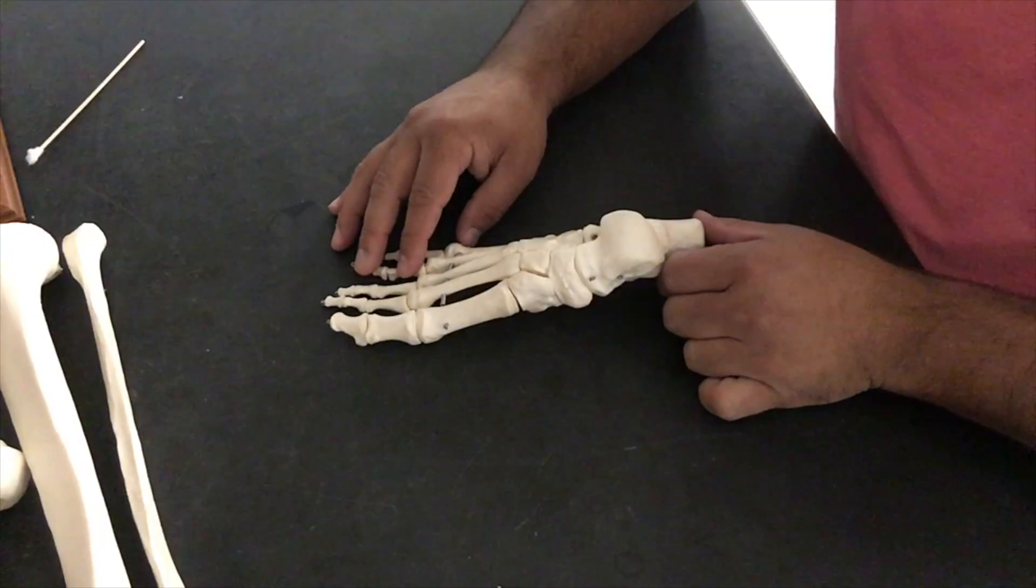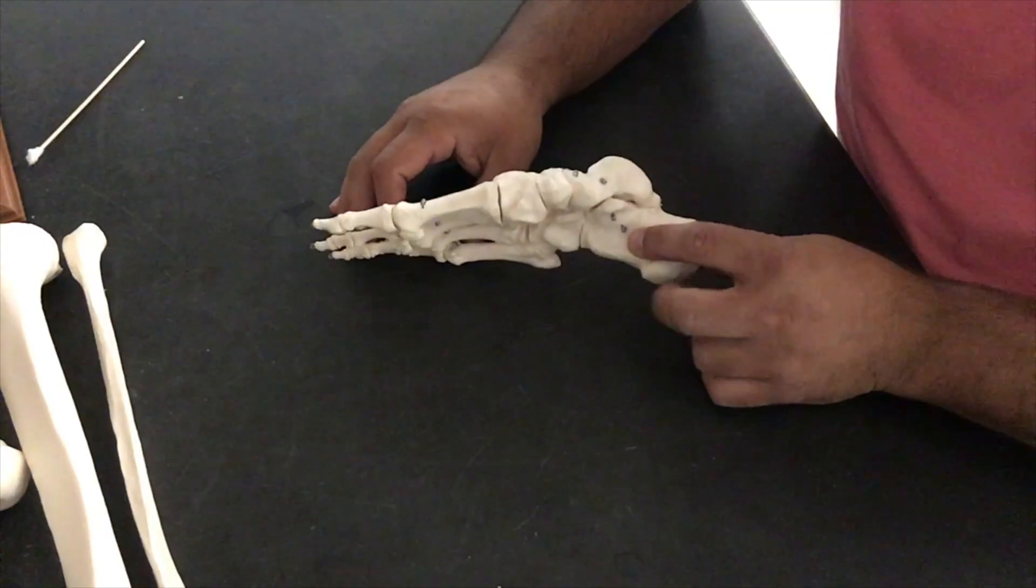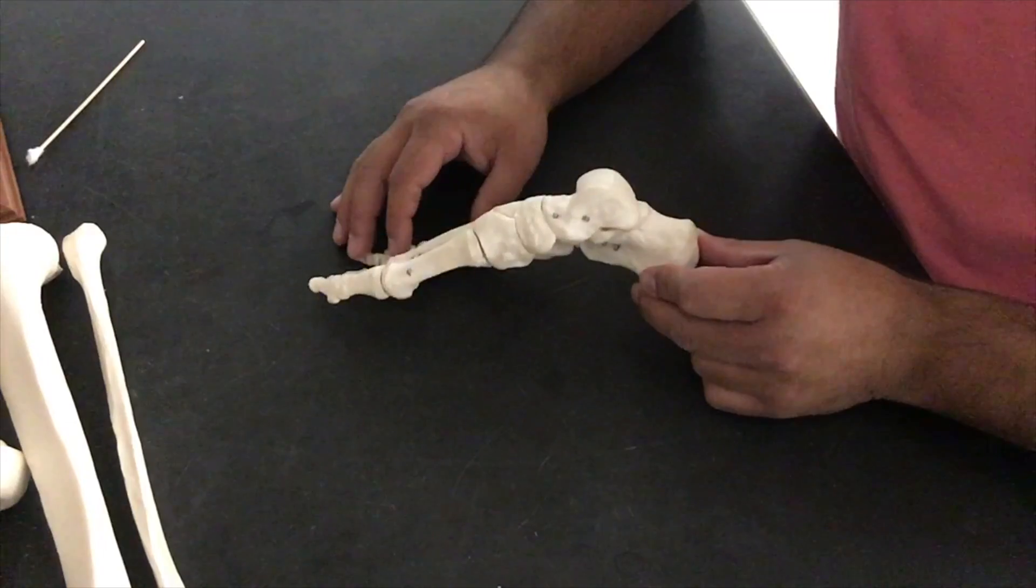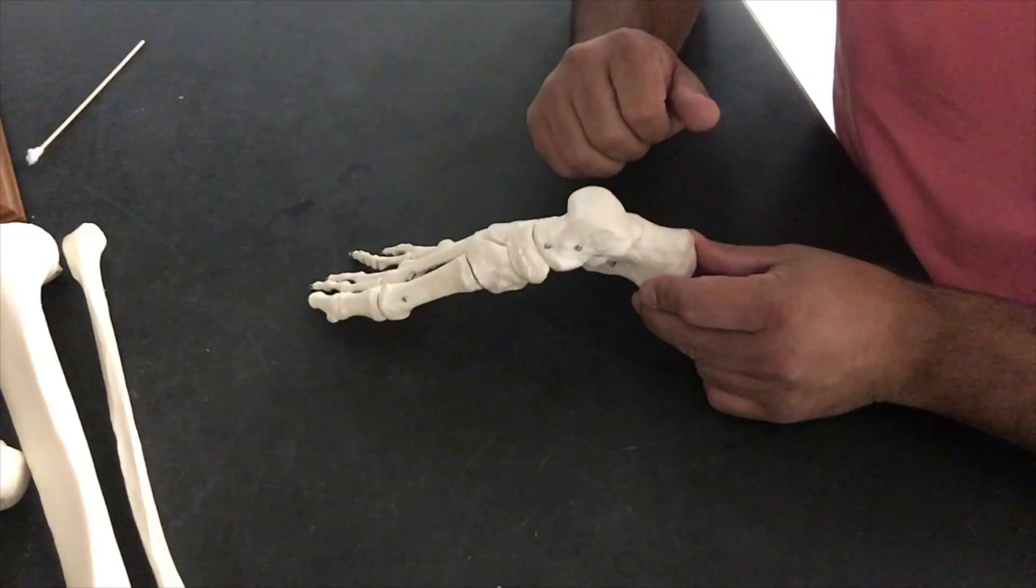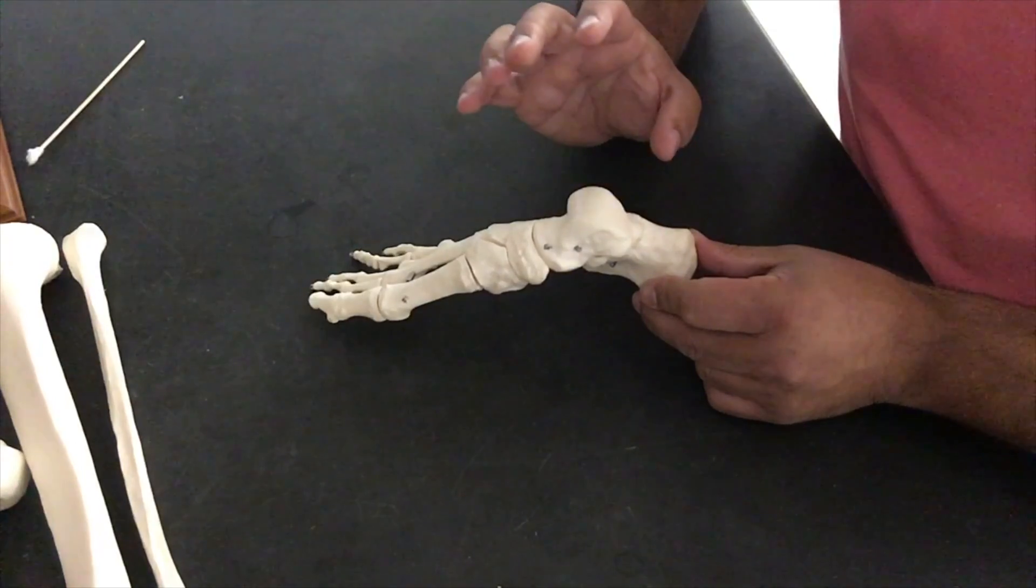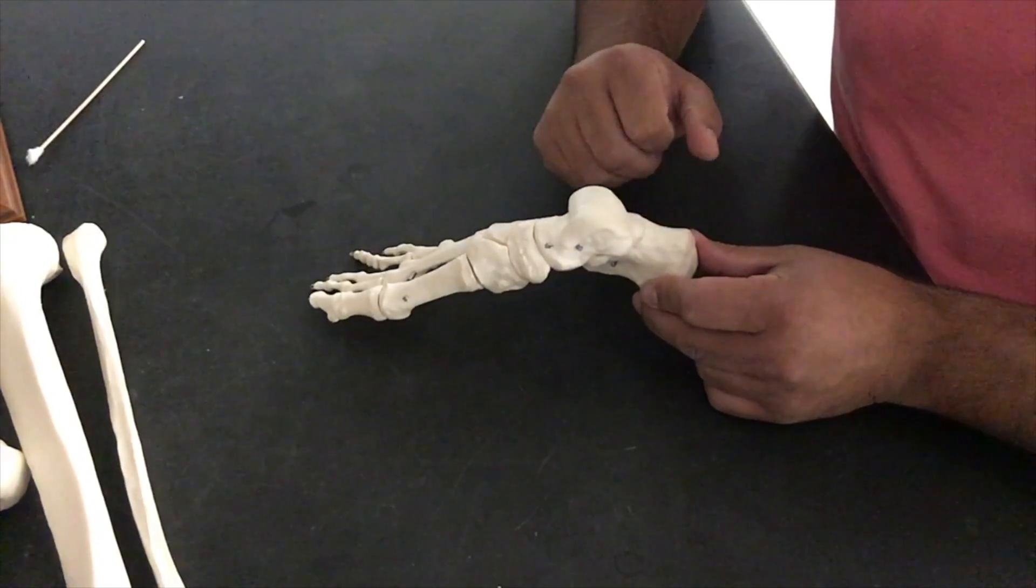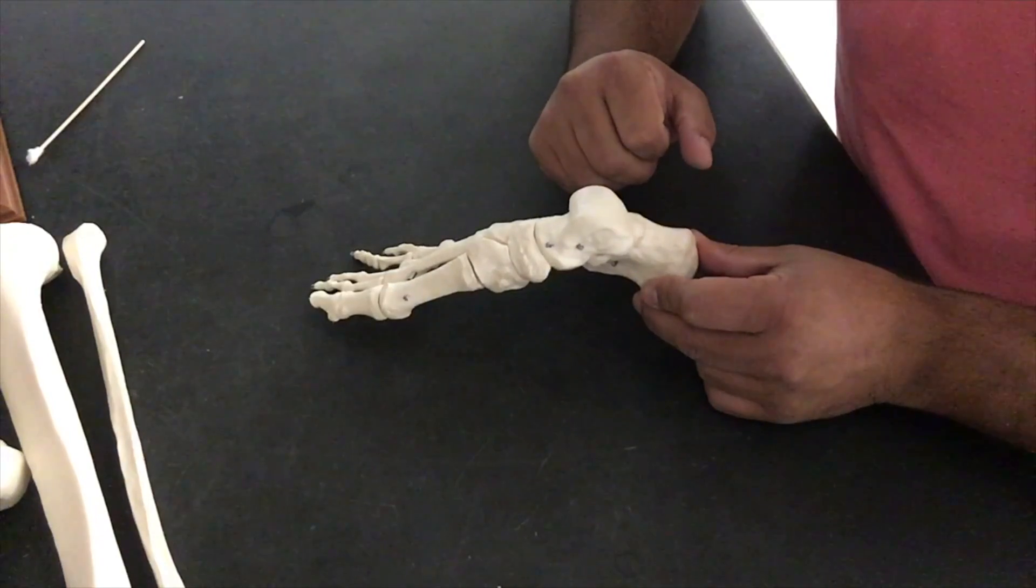So the last tutorial in our appendicular portion of our skeleton is going to be our foot. Again, you need to know all the bones, how we name our tarsal region, our metatarsal, and our phalangeal region. So let's get started.